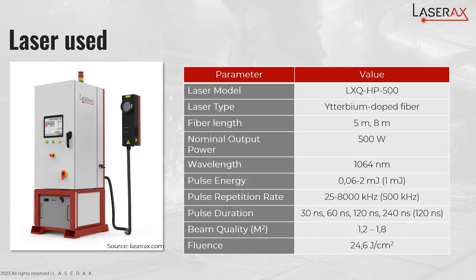The laser used for this project is the LXU HP500 from LaserAxe, which is a ytterbium-doped fiber laser with an average power of 500 W. The pulse parameters are interchangeable for this particular product, but we used basically the nominal operation of the laser. The combination of this laser and the optical elements used in the laser head generate an overall laser fluence at focus of 24.6 J/cm², which is more than enough to ablate metal. As a reference, the ablation threshold for aluminum is around 3 J/cm².